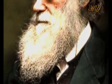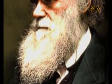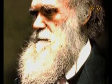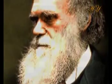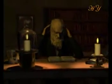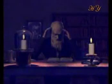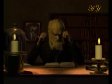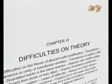Darwin was also aware of the complete lack of the intermediate form fossils he had proposed. In fact, he even predicted that this would represent a major stumbling block for his theory. He therefore wrote the following in the chapter titled 'Difficulties on Theory' in The Origin of Species.